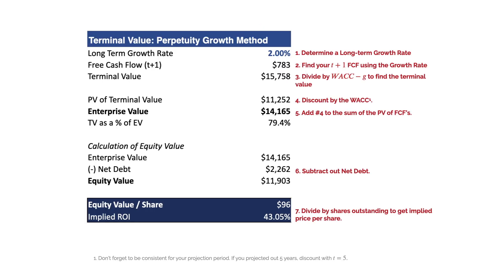Here I've assumed a 2% long-term growth rate. We have a T-plus-one free cash flow using this growth rate, and I've taken that and divided it by WACC minus the growth rate to find the terminal value of $15,758. Then I find the present value of the terminal value, discounted by the WACC. Be consistent with your projection period — if you projected out five years, discount with T equaling five. Adding this to the sum of the present values of my free cash flows gives me $14,165. That's the enterprise value. We subtract out the net debt — the same net debt used in the WACC formula — giving an equity value of $11,903. Dividing by shares outstanding gives the equity value per share and an implied ROI.